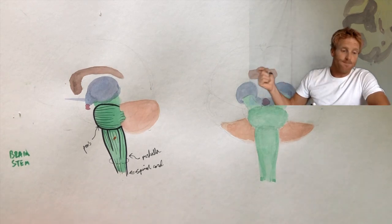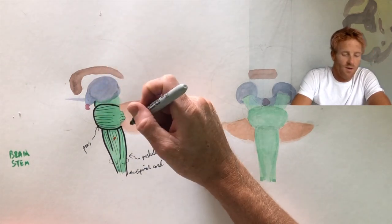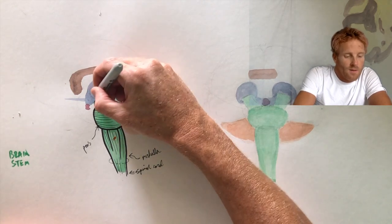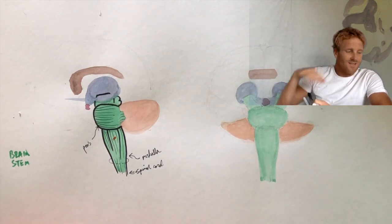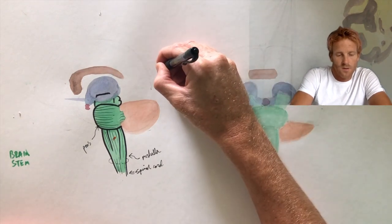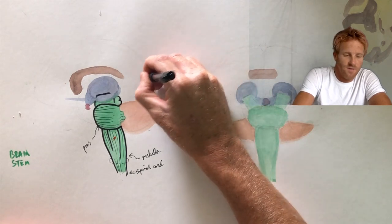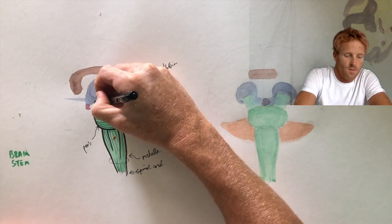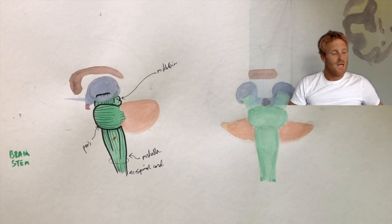The last part of the brain stem is a little piece that sits on top of the pons — this is called the midbrain. The midbrain is the most superior part of the brain stem and shares a lot of the same jobs as the other parts. And that's the brain stem.